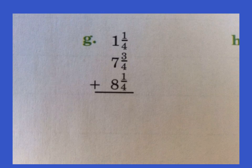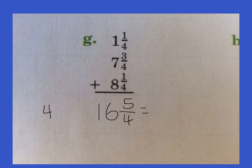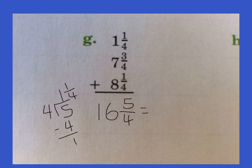One plus 3 is 4, plus 1 more would be 5 over 4. One plus 7 is 8, plus 8 more is 16. We have 16 and 5 fourths. We're going to take 5 fourths and do the work — how many times does 4 go into 5? One time. You get 1 and 1 fourth. So we take our 1 and add it to the 16, and keep the fraction of 1 fourth. So 1 plus 16 is 17, and we have 1 fourth.